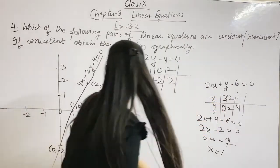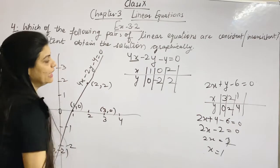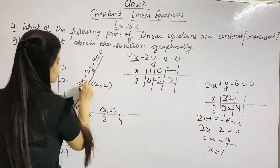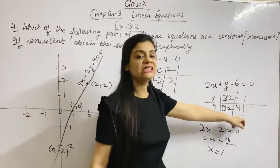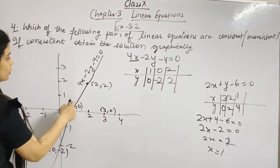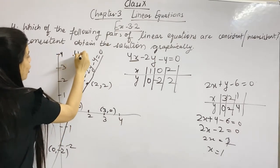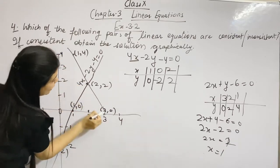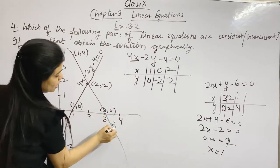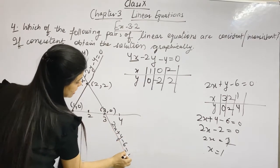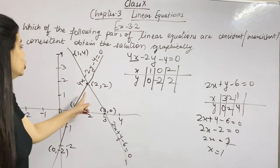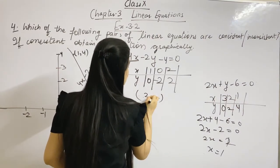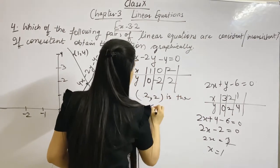The common point of the two lines is (2, 2). So x equals 2 and y equals 2 is the solution of these equations.